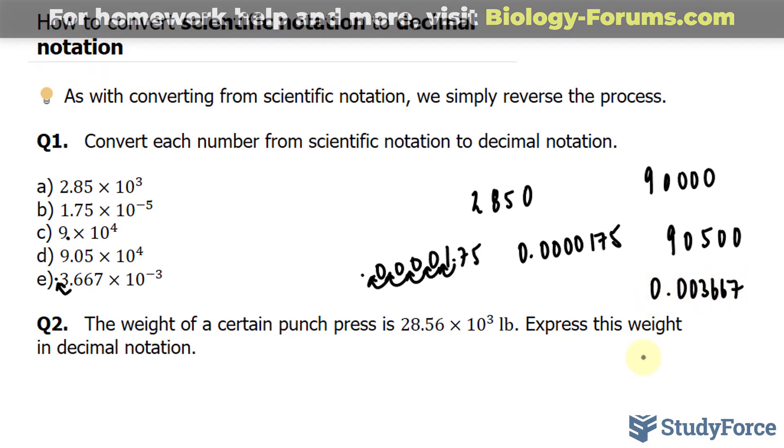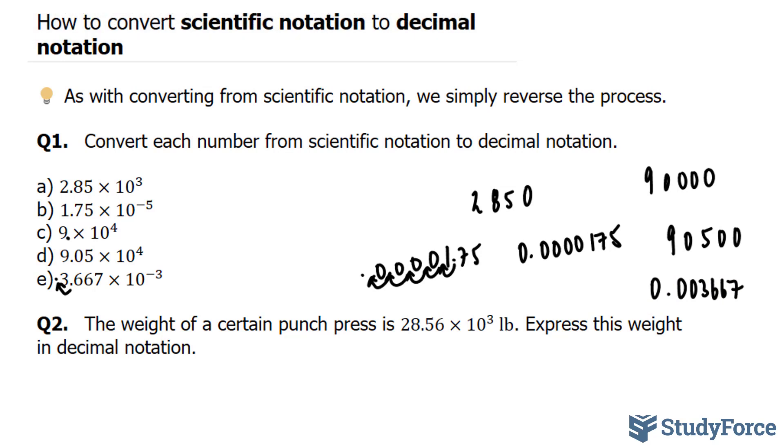In question number 2 we are asked: the weight of a certain punch press is 28.56 times 10 to the power of 3 pounds. Express this weight in decimal notation. This is more of the same as in question number 1 except that it's written in words. Since we have 10 to the power of 3 we move this decimal place 3 to the right. This means that we have 28,560 pounds of weight for this punch press.